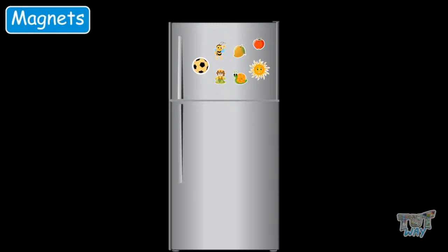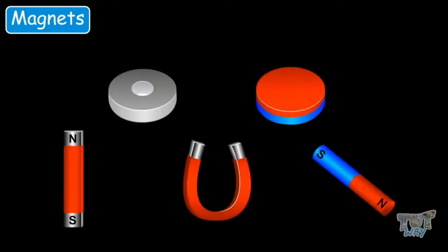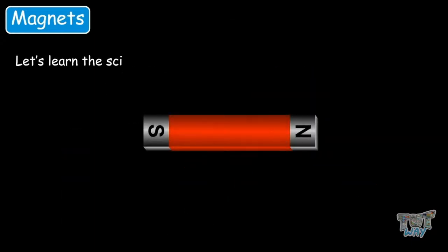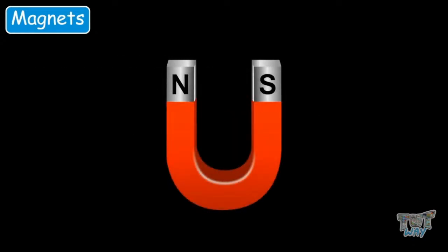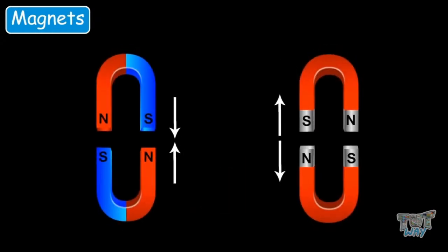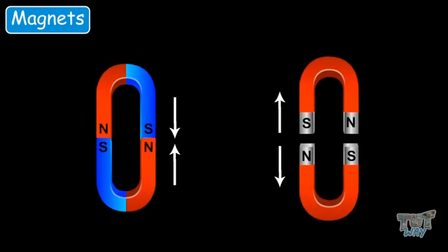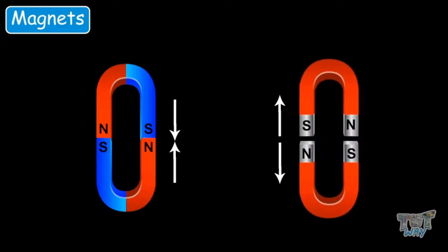So now we know what magnets are and what they are used for. Now let's learn the science behind magnets — why magnets attract things made up of iron, nickel or cobalt. What is this attraction all about? Magnets have a north pole and a south pole at opposite ends, where opposite ends of magnets attract each other and like ends repel each other.